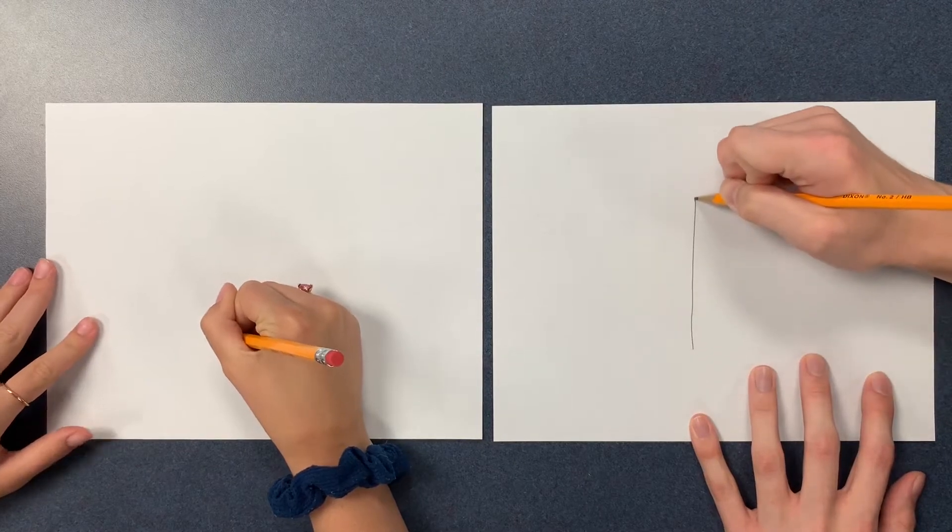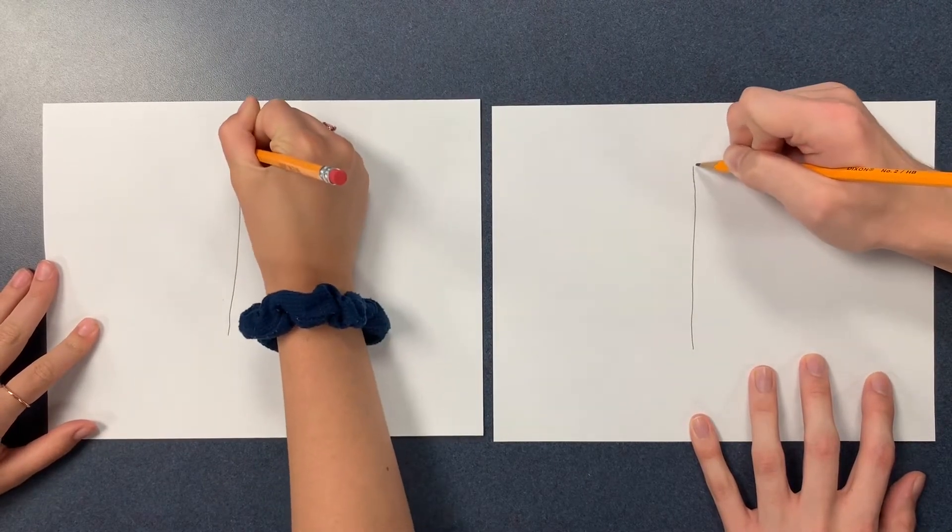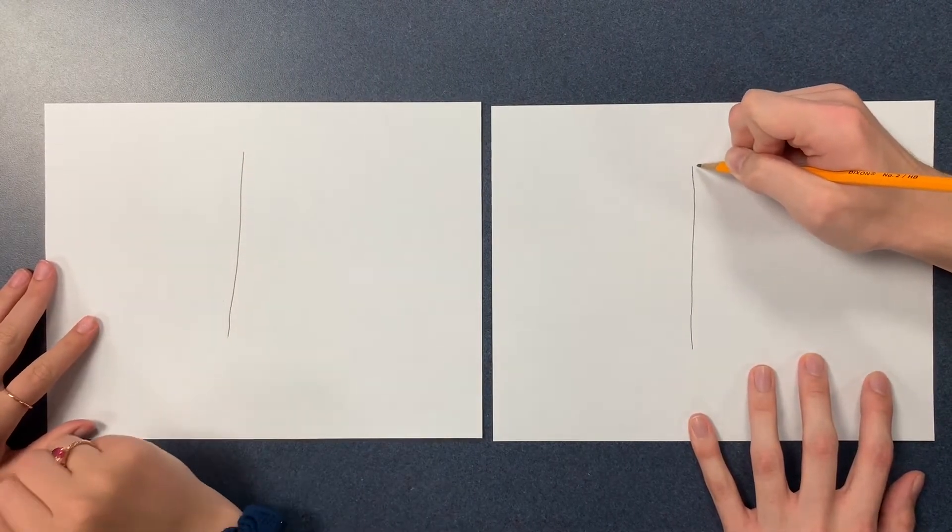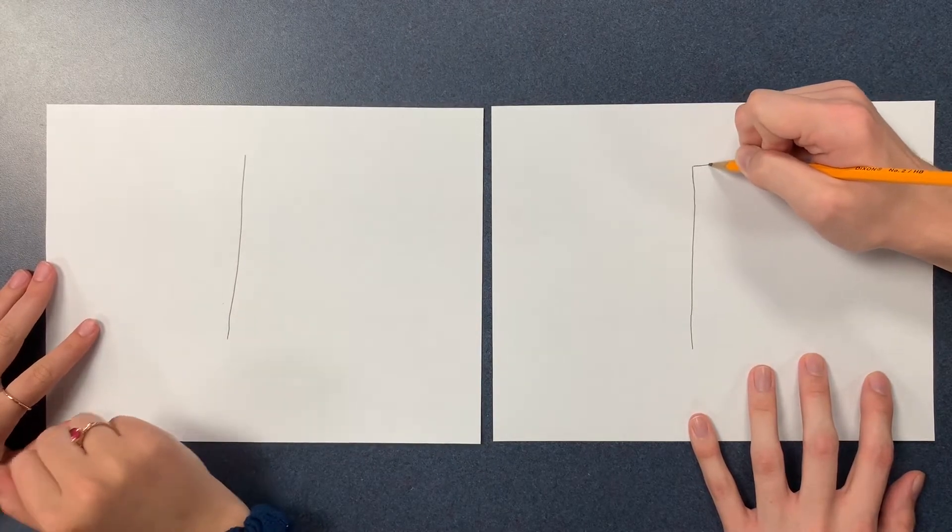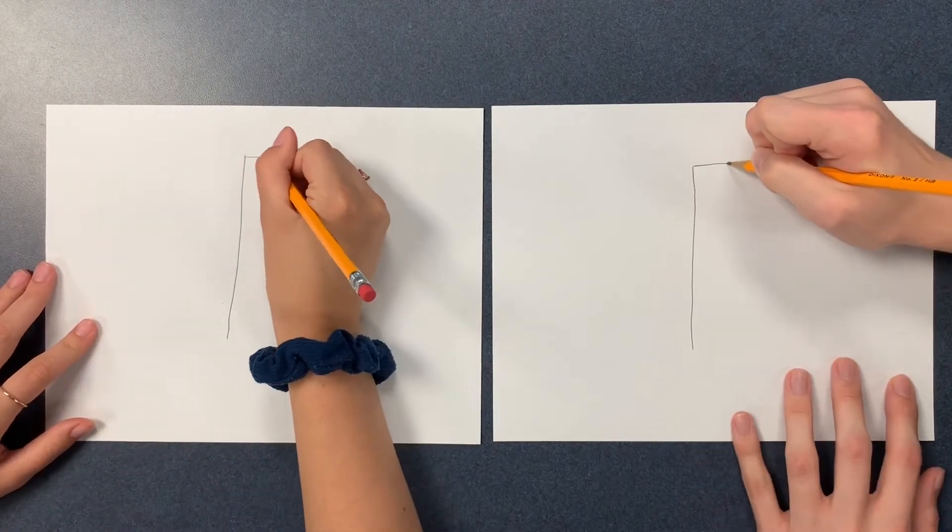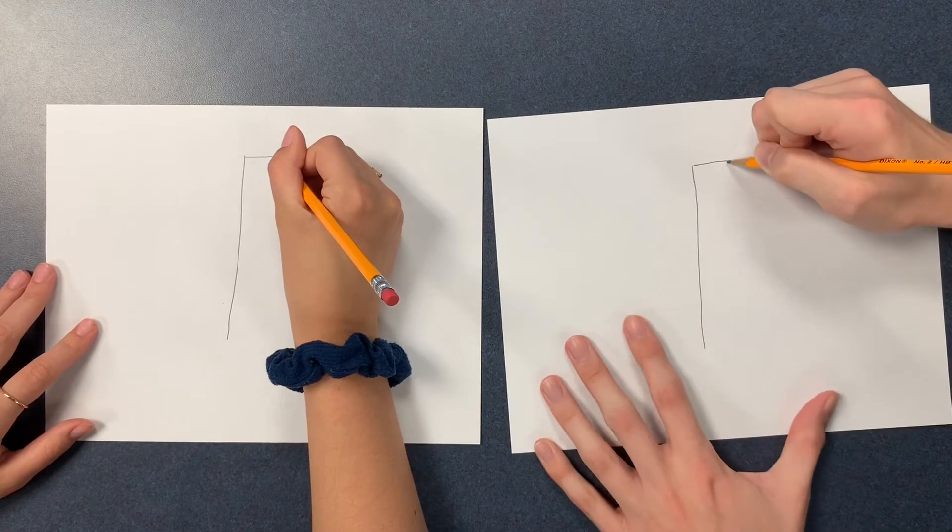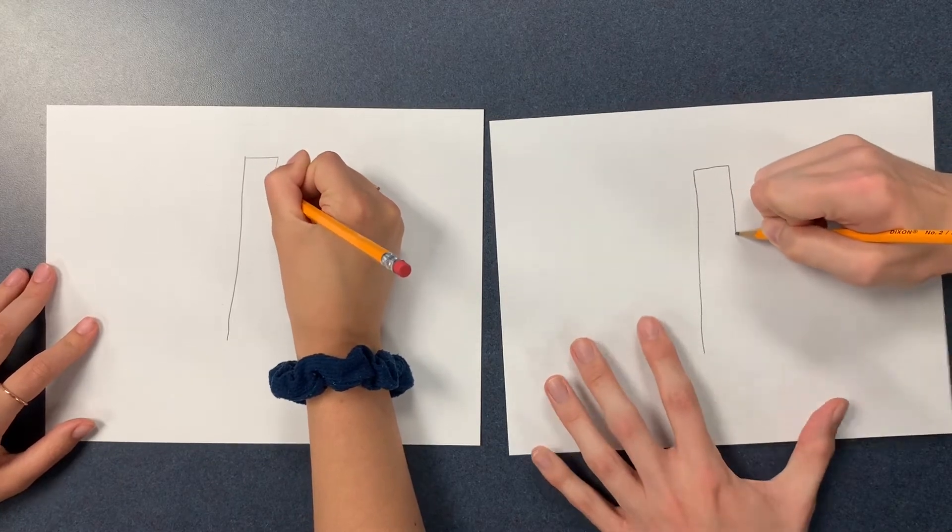Try and make as straight of a line as you can up. That's fine. And then go across and then try and make a parallel line down.